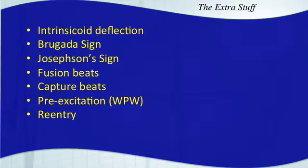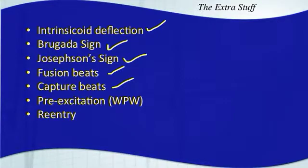The first thing we'll talk about is the intrinsicoid deflection. Don't let the term intrinsicoid confuse you — it's really not that difficult of a finding to look for on an EKG. We'll also cover Brugada sign, Josephson sign, fusion beats, and capture beats. All of these things will help you identify ventricular arrhythmias.